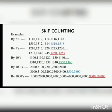By 10s: 1,100 — 1,110 — 1,120 — 1,130 — 1,140. By hundreds: 2,000 — 2,100 — 2,200 — 2,300 — 2,400.